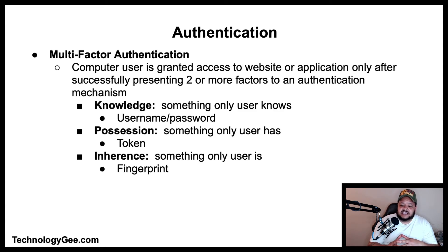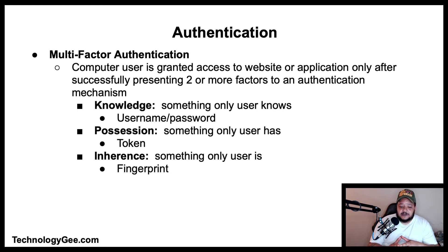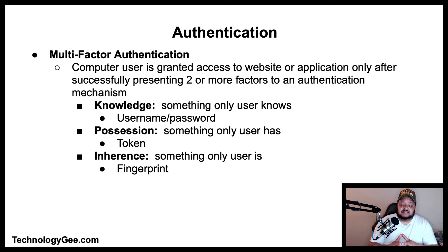Next we have multi-factor authentication, an electronic authentication method in which a user is granted access only after successfully presenting two or more pieces of evidence. Those factors include: knowledge — something only the user knows, such as a username or password; possession — something only the user has, such as a token; and inherence — something only the user is, like a fingerprint or retina scan unique to their body.